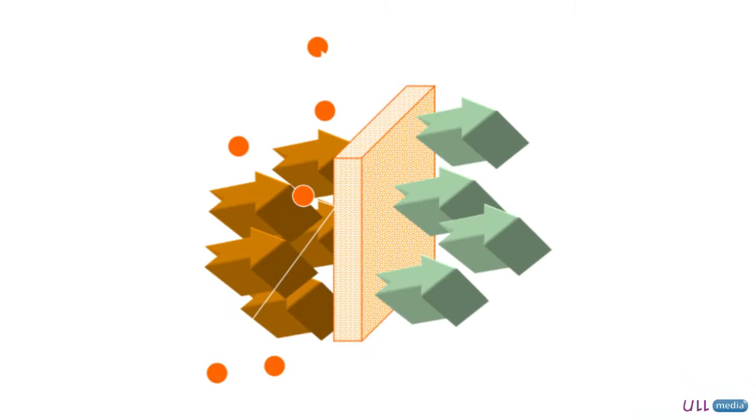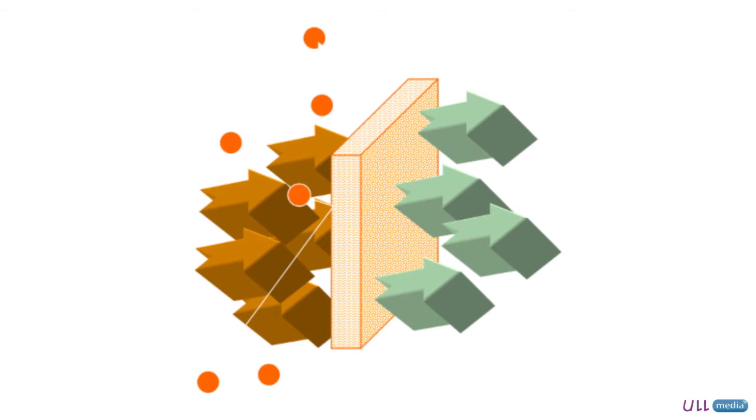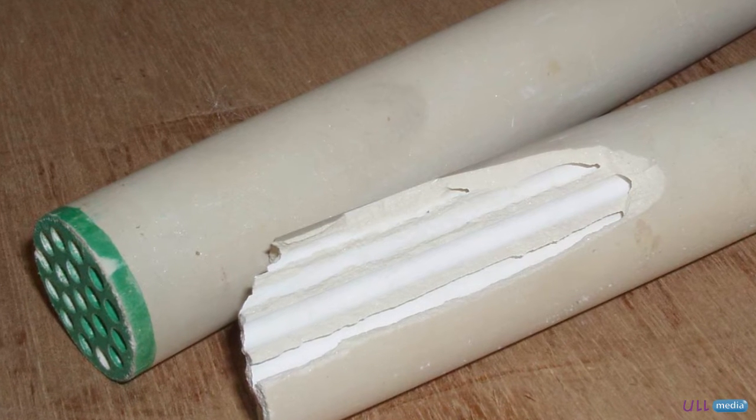A membrane is a material that allows certain substances to pass through while blocking others. In the case of water purification or reclamation, the water flows across the membrane which blocks undesirable species. By choosing the right type of membrane and making use of it appropriately, almost any contaminant can be trapped.